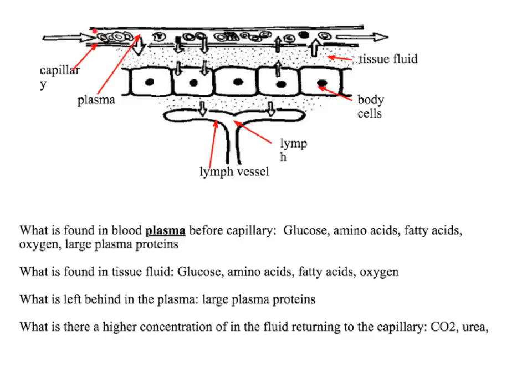Once we get to the capillary bed, small soluble molecules will be forced out of the capillary due to the gaps in the capillary wall and the high hydrostatic pressure. These include glucose, amino acids, fatty acids, and oxygen. Things that are left behind in the plasma — which are too big to fit through the gaps in the capillary wall — are your large plasma proteins, and these are the things that lower the water potential in the capillary.